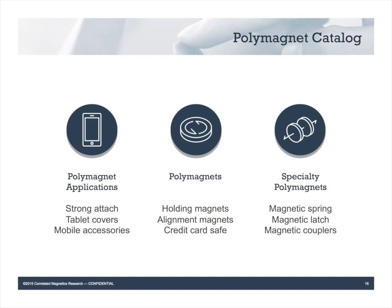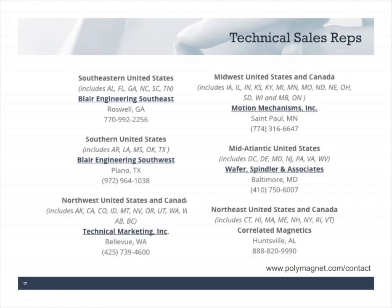You've heard me mention our polymagnet catalog. The catalog is a growing collection of useful magnets to help you start your product design or try out these unique magnets. You can learn more about the applications we support, get useful data to help you choose the right polymagnet, and learn about specialty functions like springs and latches. There are also links to our partners where you can purchase magnets. We'll be adding more magnets and selection tools frequently, so please check our website often. When you're ready for more, feel free to contact one of our technical sales reps.